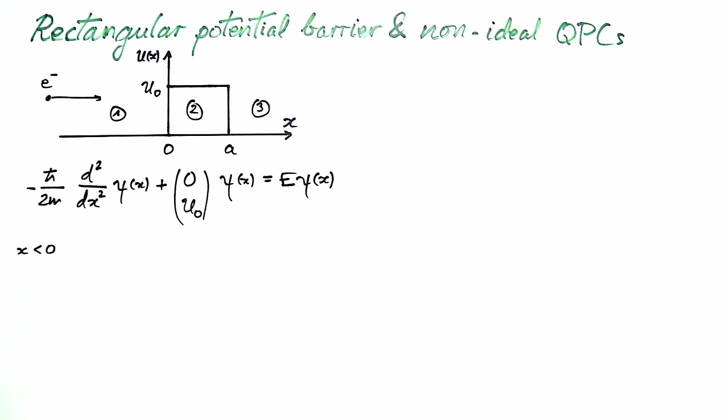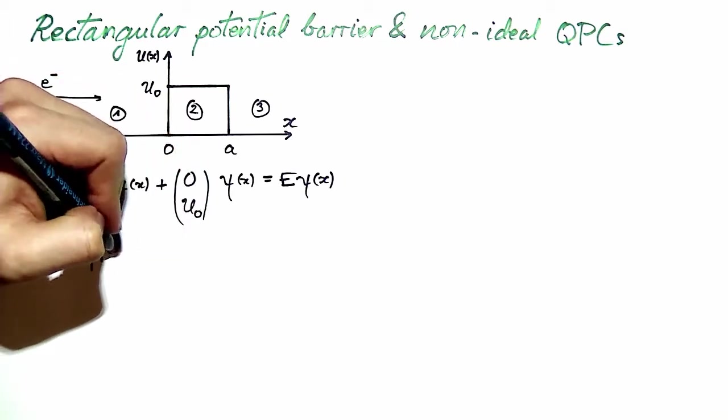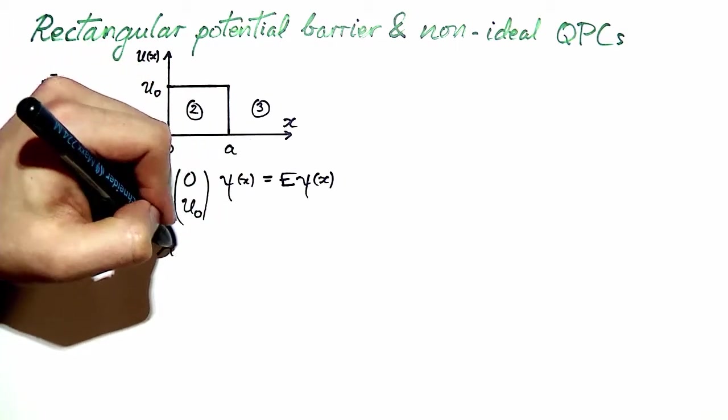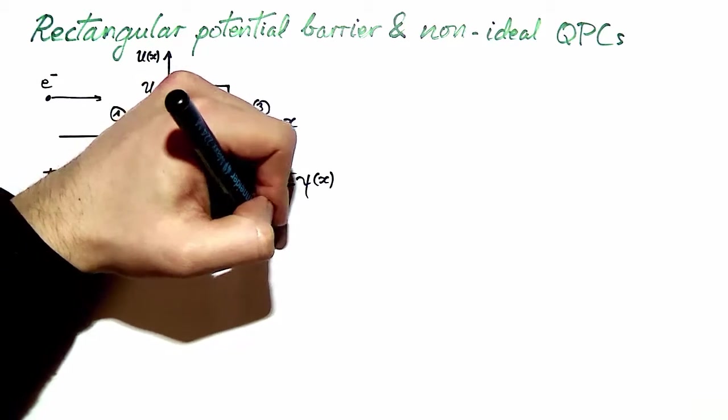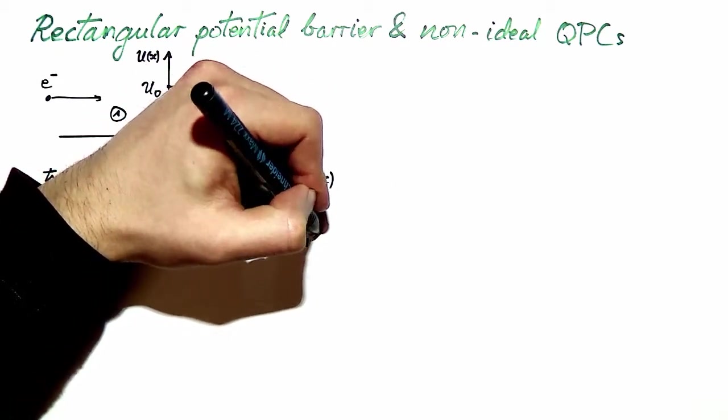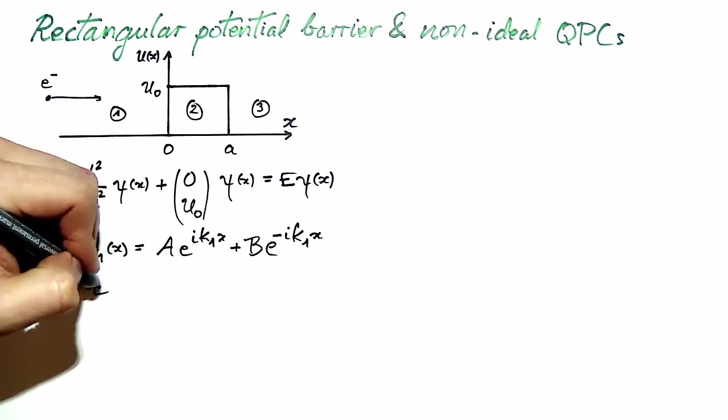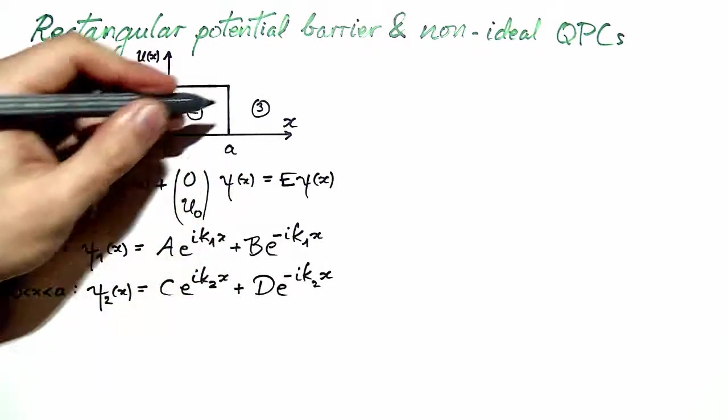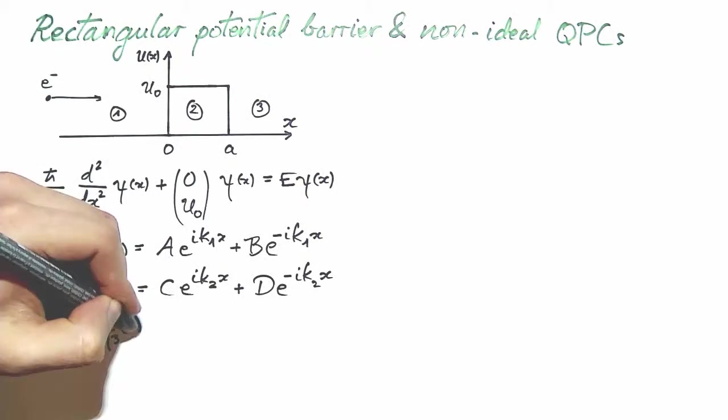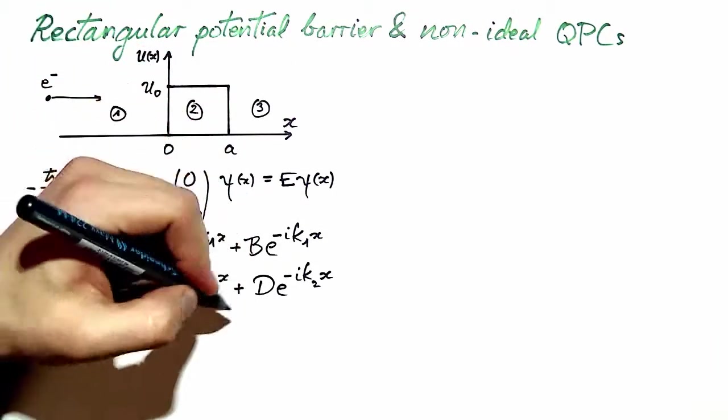For x smaller than 0, we obtain the superposition of a right propagating plane wave and a left propagating wave. In region 2 we also have right and left propagating waves. And in region 3, right of the barrier, we only consider a wave propagating to the right because we have no electron coming from the right to the left.